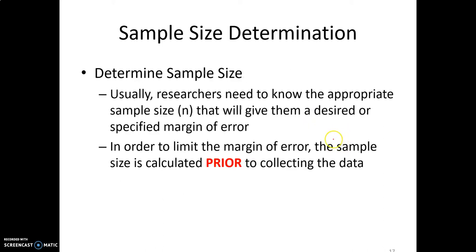We know how to calculate the margin of error. We've done that in the last few examples where we calculate that plus or minus number — that margin of error, that's the sampling error. When we start doing research, one of the first questions is how many surveys do we need to hand out, how many pieces of data do we need to collect? That is trying to determine our sample size.